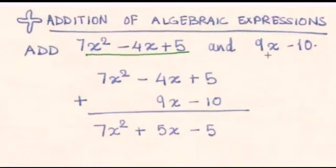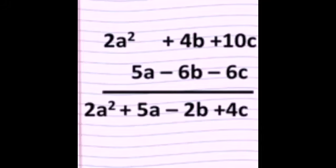After this, we solve the sum. Plus 5 minus 10, we write minus 5. Minus 4x plus 9x, answer is plus 5x. And 7x² is single, so we write 7x². In column method, we always arrange like terms in such a way that they are one below the other.